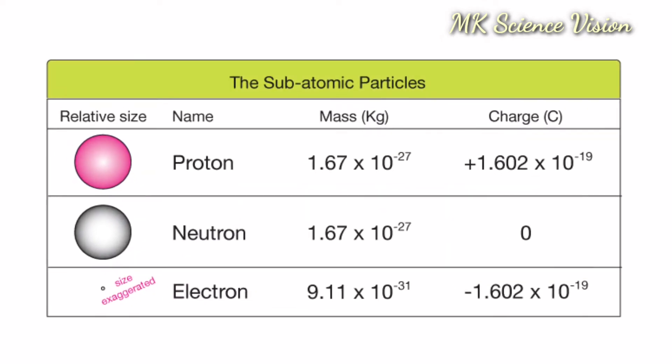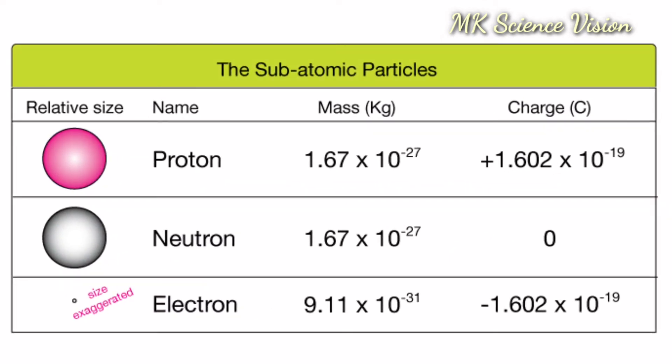Mass of the proton is 1.67 x 10 to the power of minus 27 kg and charge of the proton is 1.602 x 10 to the power of minus 19 coulomb. Mass of the neutron is 1.67 x 10 to the power of minus 27 kg and charge is 0. Mass of the electron is 9.11 x 10 to the power of minus 31 kg and charge is minus 1.602 x 10 to the power of minus 19 coulomb.